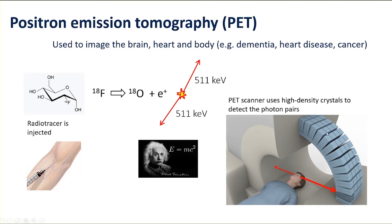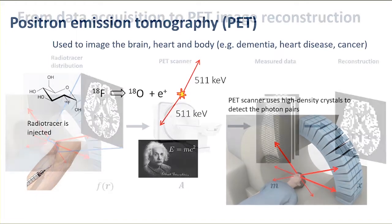For the moment, we're still with conventional PET, and that's what I'll be focusing on in this talk. We get these back-to-back photon pairs being detected by the scanner, and we could be dealing with hundreds of millions to up to a billion of such photon pairs being detected in a typical PET scan.